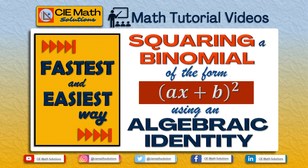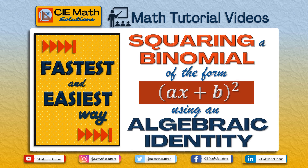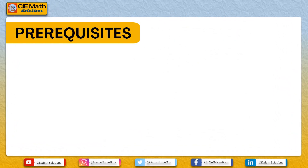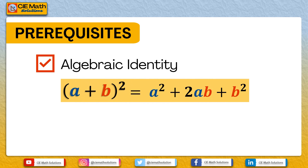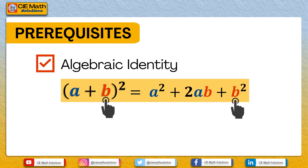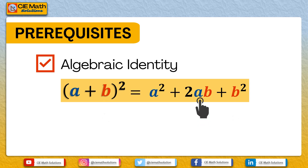In today's video we will explore the use of the algebraic identity a plus b squared equals a squared plus 2ab plus b squared in squaring any binomials of the form ax plus b. Let us recall the prerequisite concepts. In the expanded form, the first term is the square of the first term of the binomial, the last term is the square of the second term, and the middle term is twice the product of the two terms.